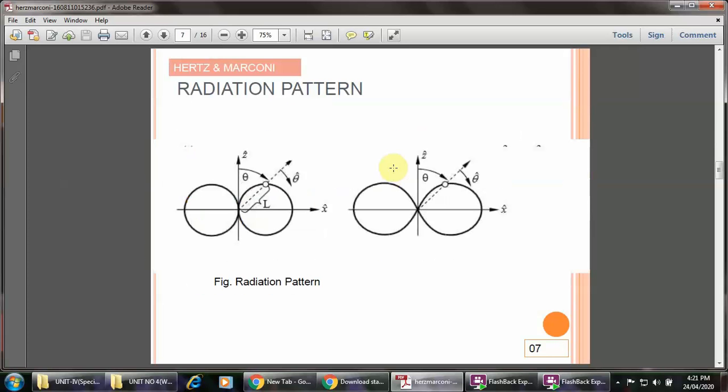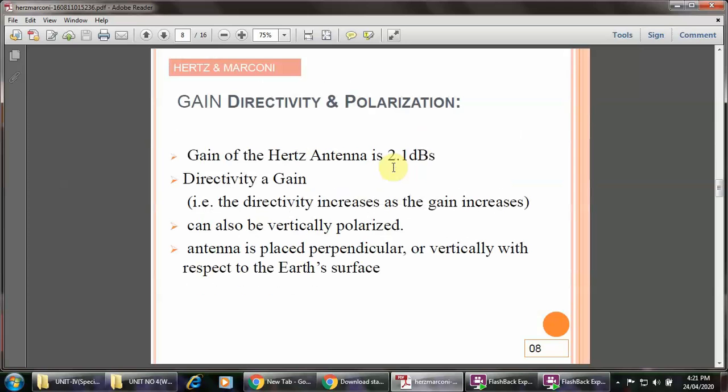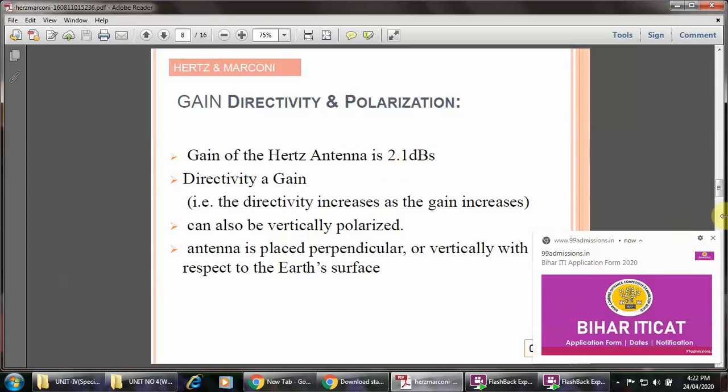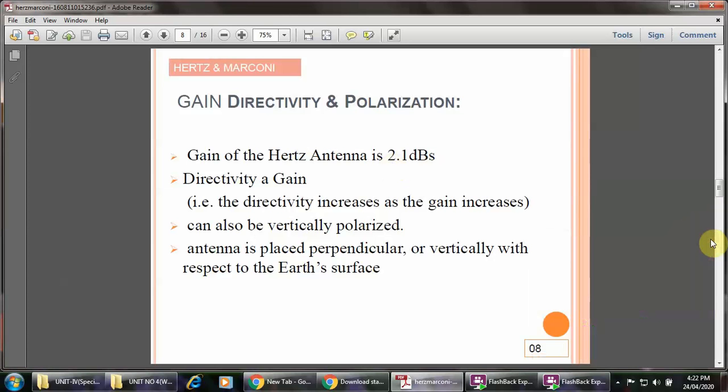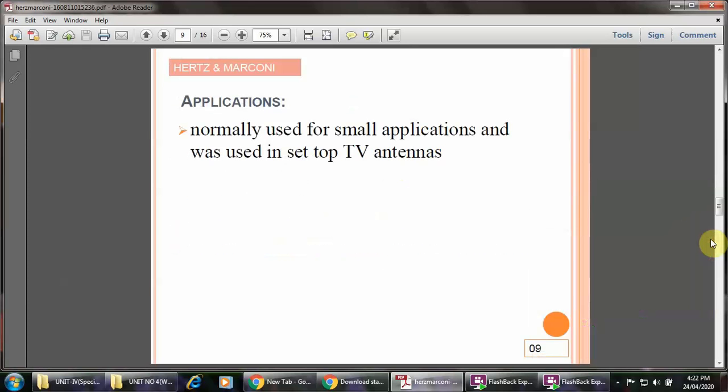The radiation pattern figure is obtained using the Hertz antenna. The gain of the Hertz antenna is 2.1 dB, and directivity increases as gain increases. Its polarization state is generally vertical - the antenna is placed perpendicular or vertically with respect to the Earth's surface. Applications include small-scale uses and was used in early TV channels.